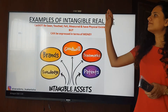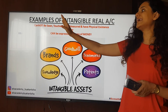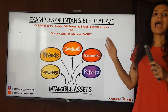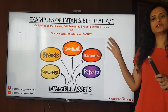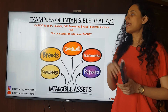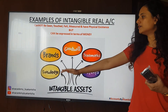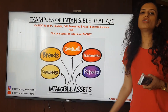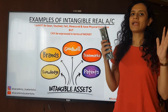Examples of intangible real accounts — these are things that cannot be seen, touched, felt, or measured and do not have physical existence, but they can be expressed in terms of money, meaning they carry a monetary value. Examples include knowledge, brands, goodwill, trademarks, and patents. These are all our intangible real account examples.